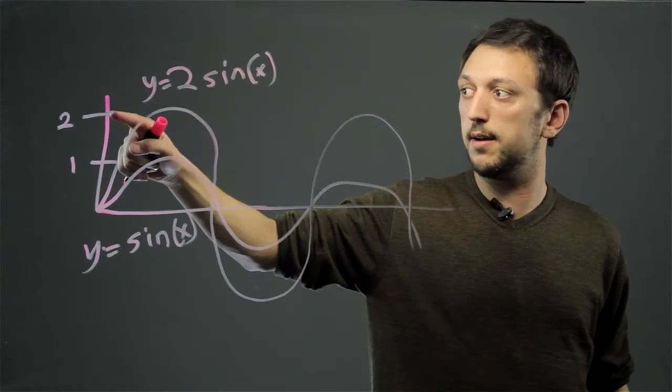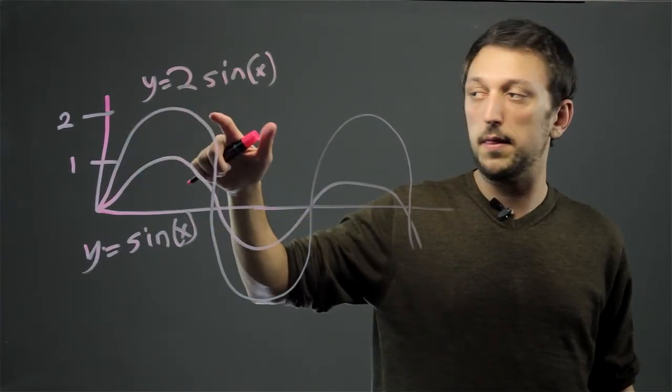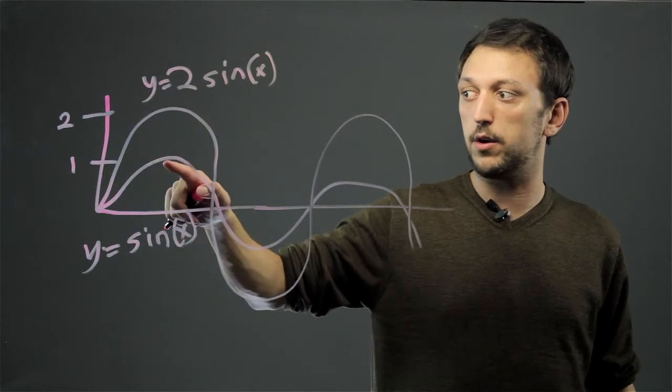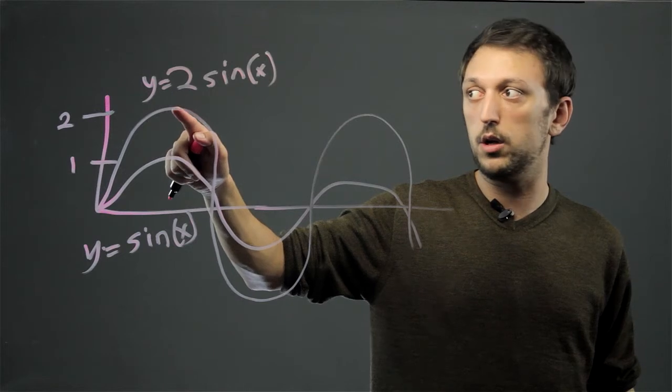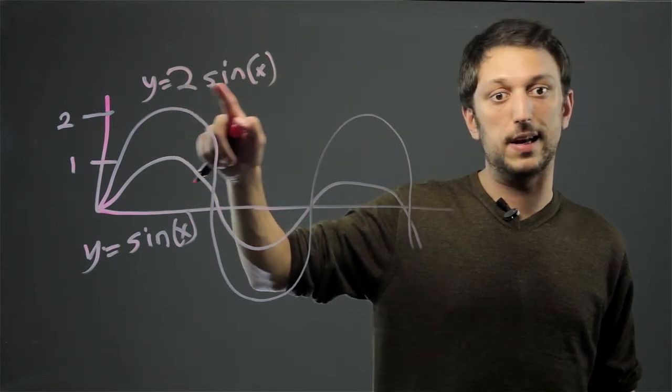So, whenever we have a shift in amplitude, that corresponds to the coefficient. For example, if we start and this has an amplitude of one, and this one has an amplitude of two, we'll just double the coefficient in the sine function.